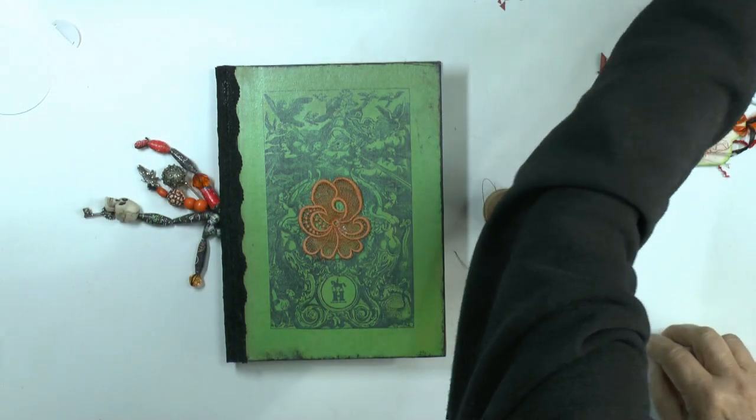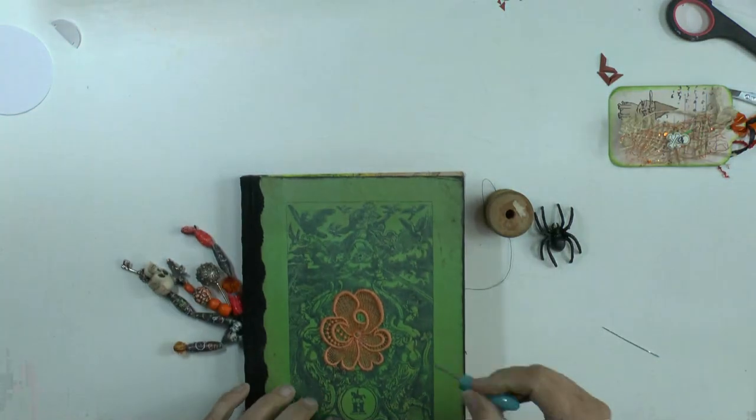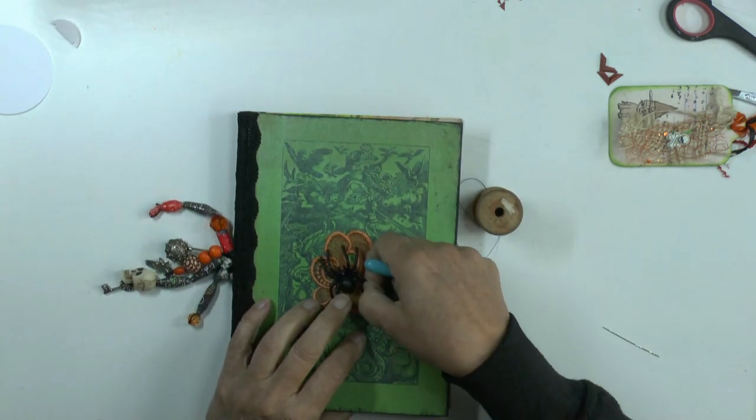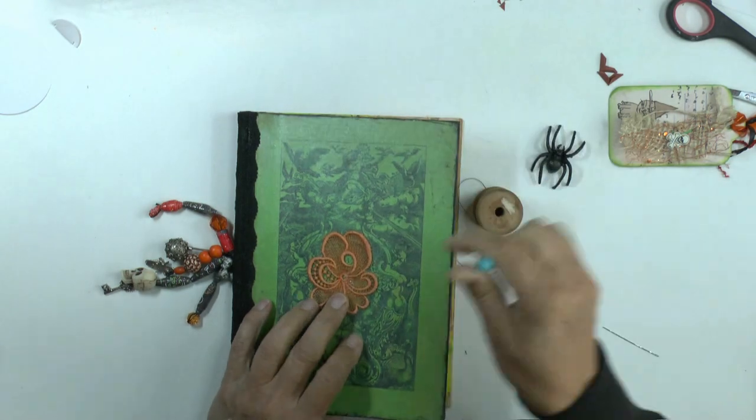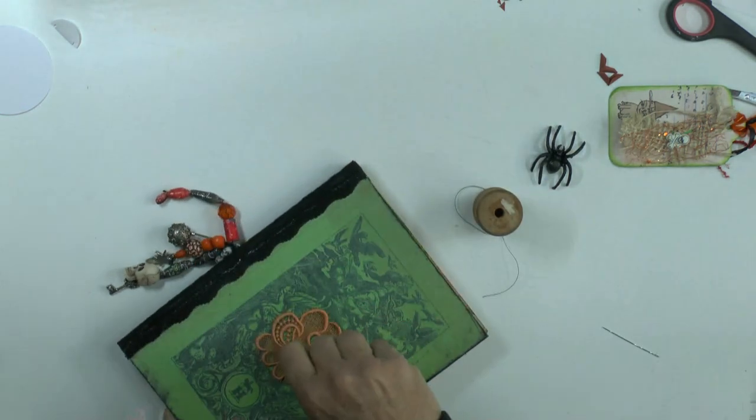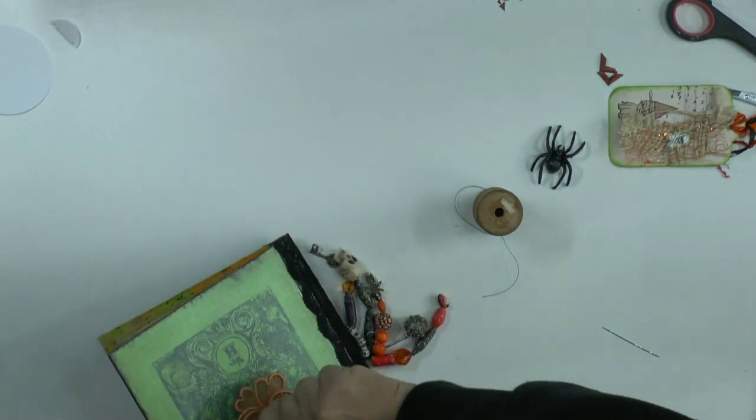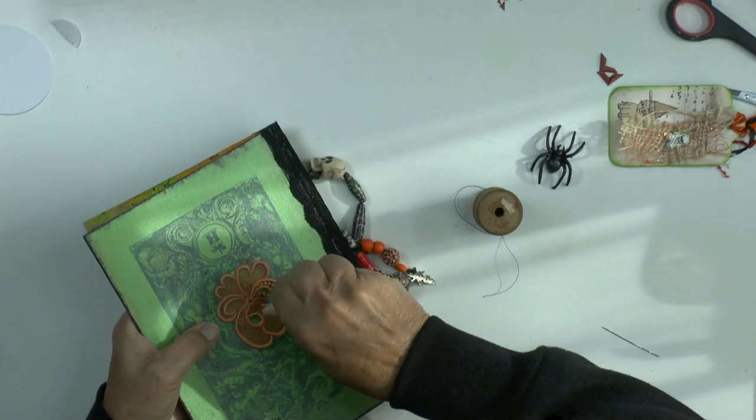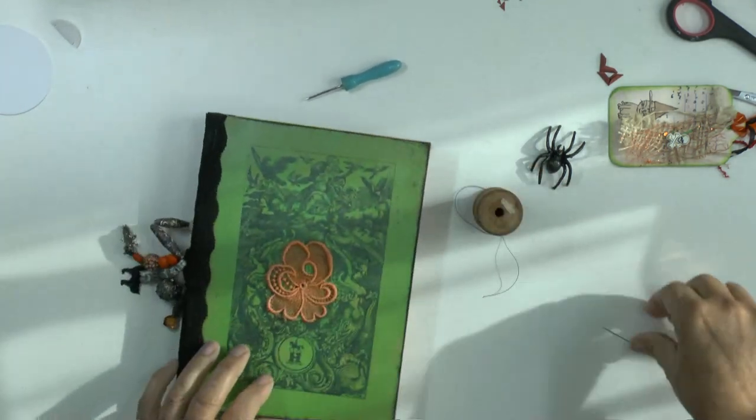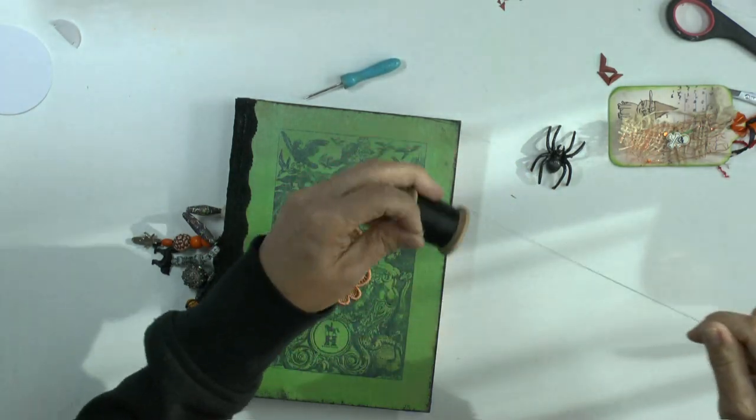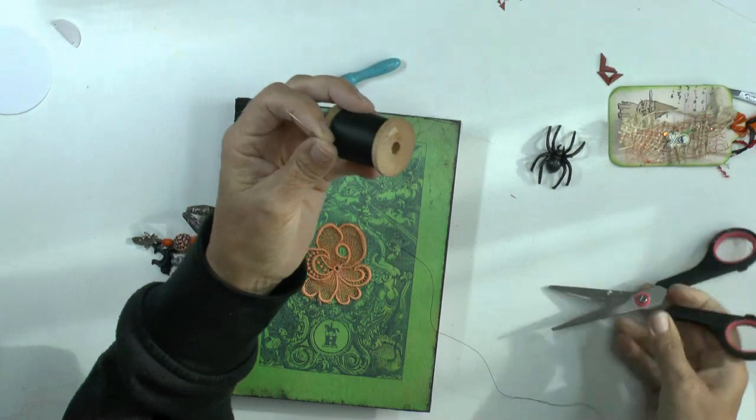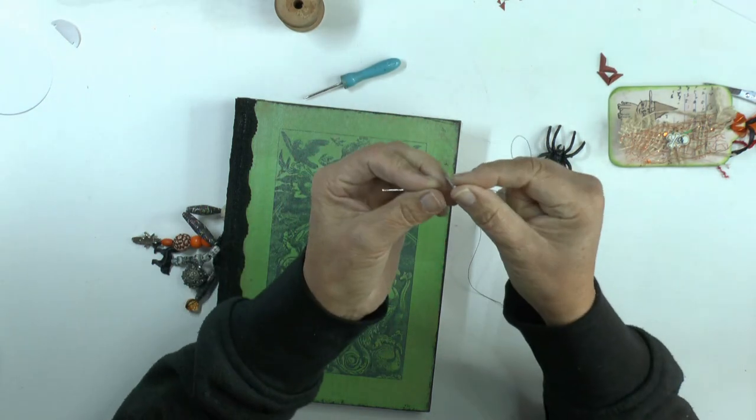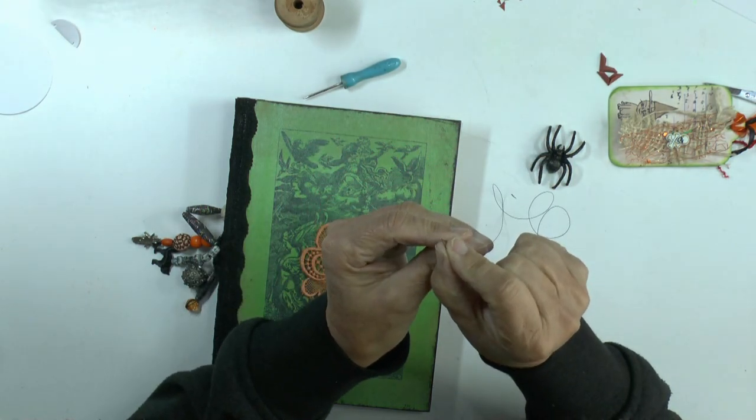And I will poke some holes in here. I could do one over there. Poke a hole there and poke a hole there. Two holes. And now I can sew the spider on. I have enough, we say in Dutch. That's meaning that I have no patience anymore. Enough is enough.